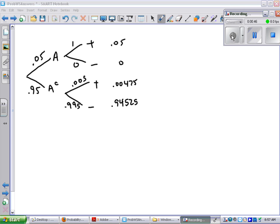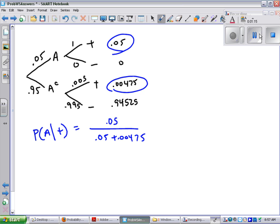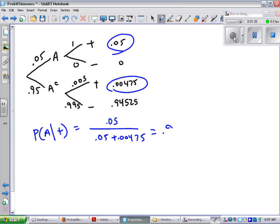So when you multiply down the trees, you get those numbers right there. It says find the probability that a person who tests positive really has AIDS. So the probability they have AIDS given that they test positive. The test positives go on the bottom and just those with AIDS goes on the top. And that equals 0.9132.